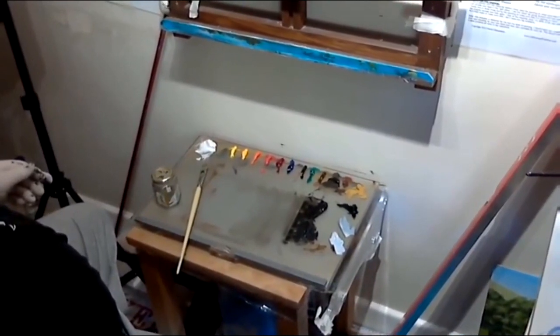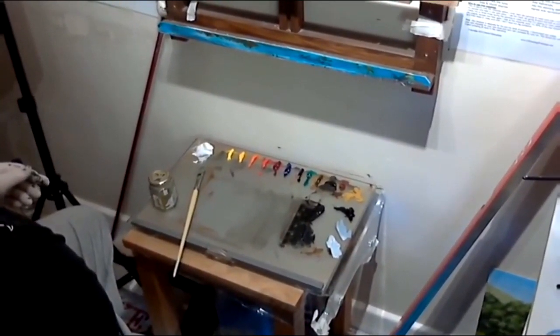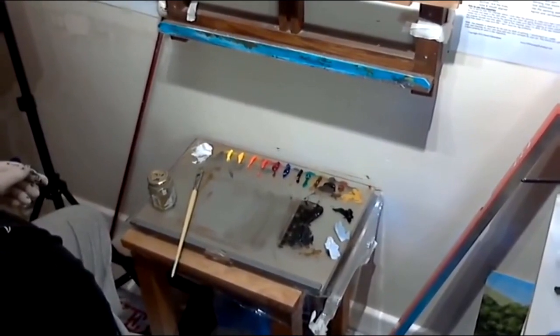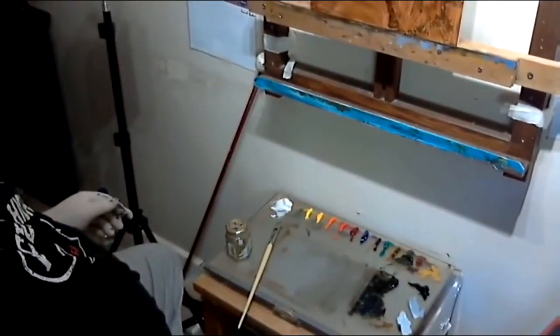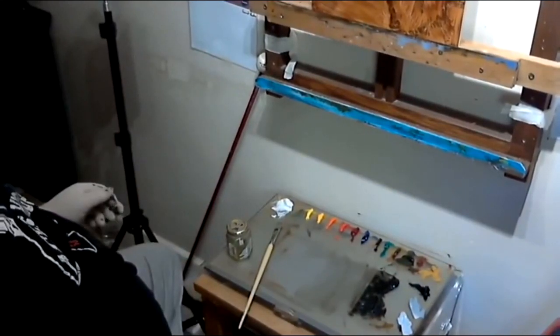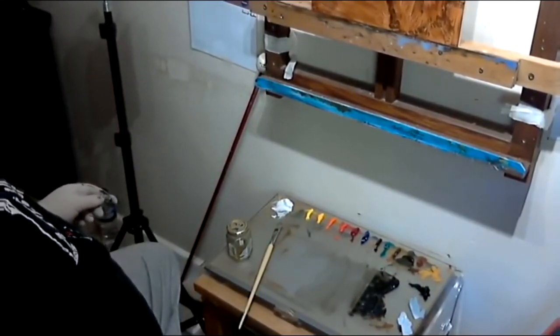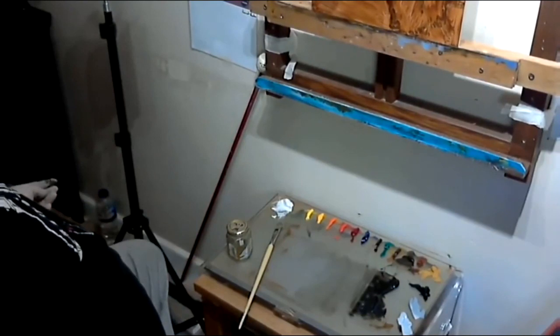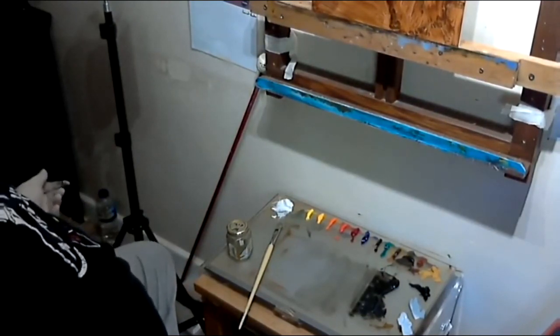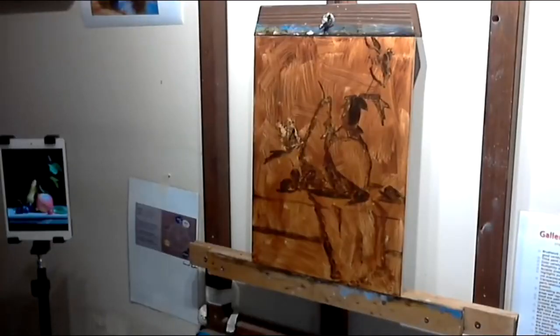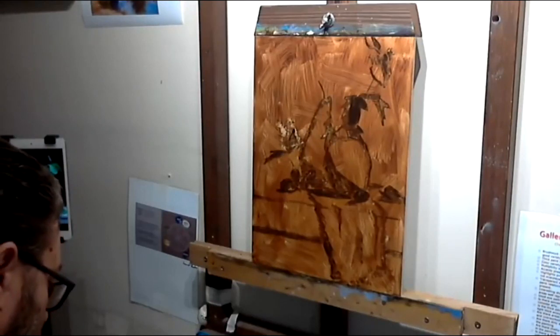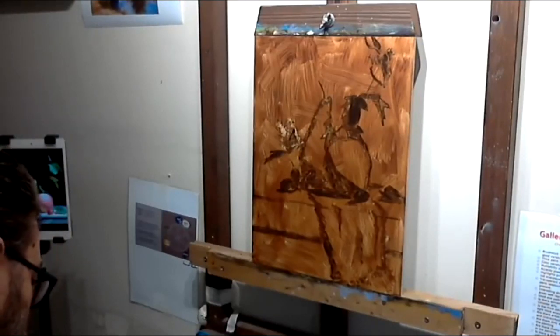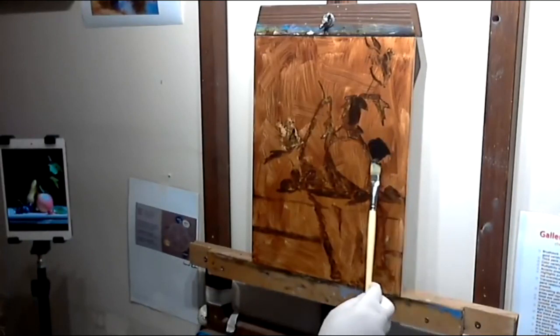For the color palette left to right we are using titanium white, lemon yellow, cadmium yellow, yellow ochre, cadmium orange, alizarin crimson, red oxide, burnt sienna, burnt umber, blue ultramarine, cobalt blue, veridium green, sap green and some ivory black. I always make two grays as well on the side to neutralize some colors if I need to.